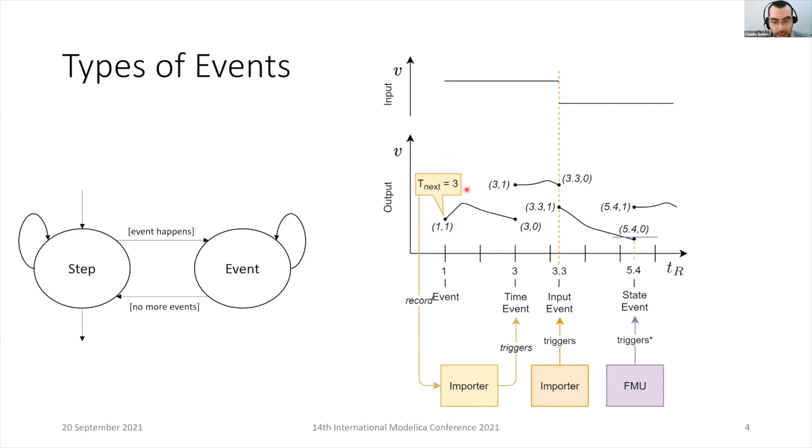the FMU informs the importer that a time event is to be scheduled. For example, for time three seconds, when time is equal to three, then the importer records this notion. At the right time, the importer will push the FMU into the event mode.